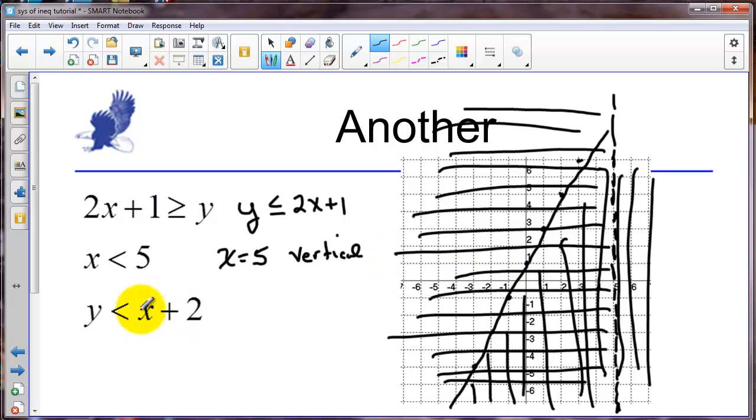Okay our third inequality is this one. So we have a y intercept at 2. And a slope of 1. So we're headed up this direction here. So we can draw that boundary. Again it's going to be a dashed line.